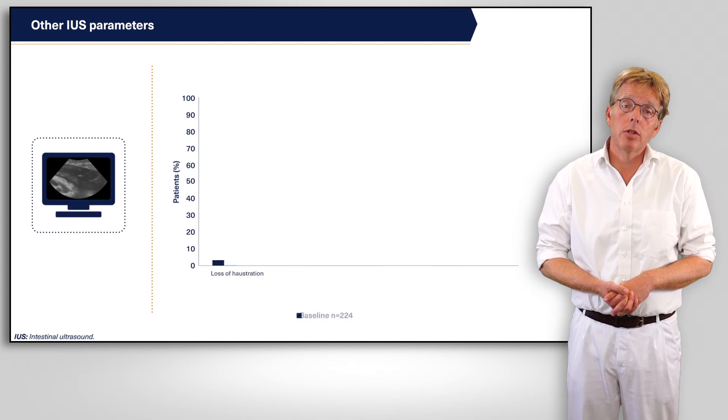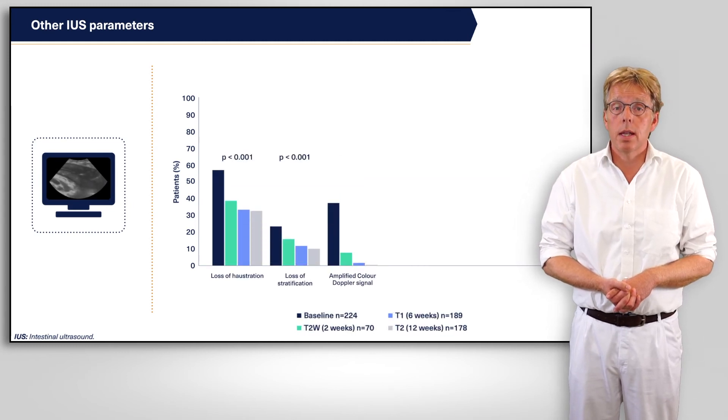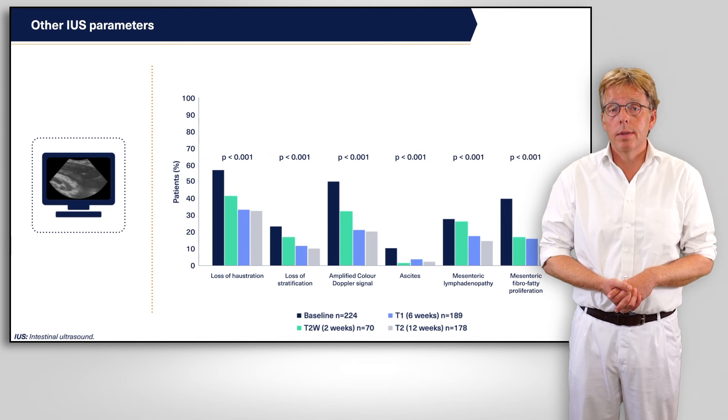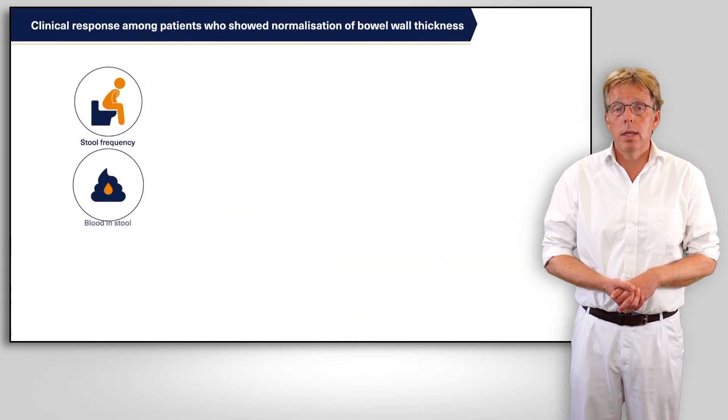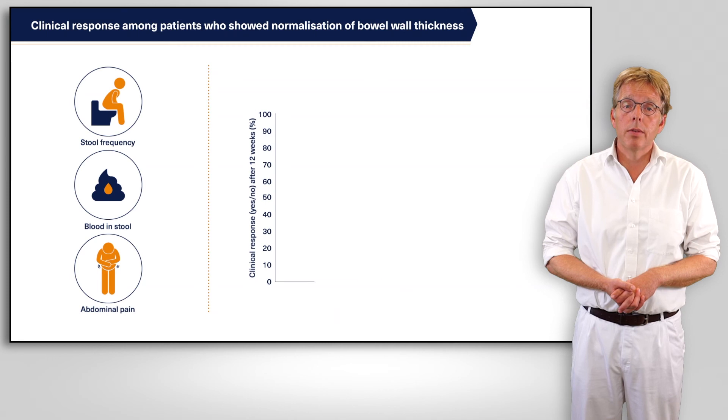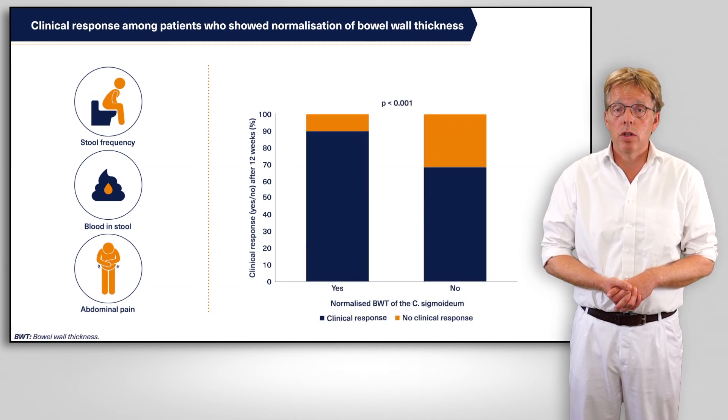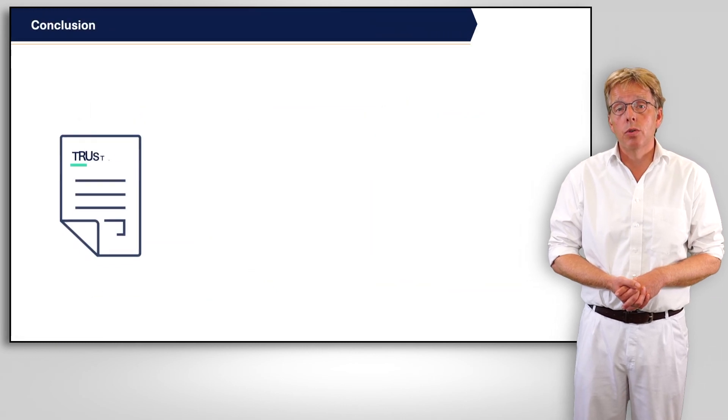Further IUS parameters such as loss of haustration showed the same tendency and were significantly decreased after two weeks. Likewise, at week 12, the rates of clinical response were significantly higher among patients who showed normalization of bowel wall thickness.